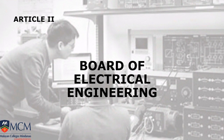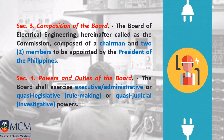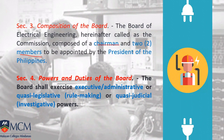Article 2 covers the Board of Electrical Engineering. The board is composed of three members — a chairman and two members — who make the board exams and are under the PRC, Professional Regulation Commission. They are appointed by the President of the Philippines. Currently, only two members have been appointed and there is no chairman for the Board of EE.